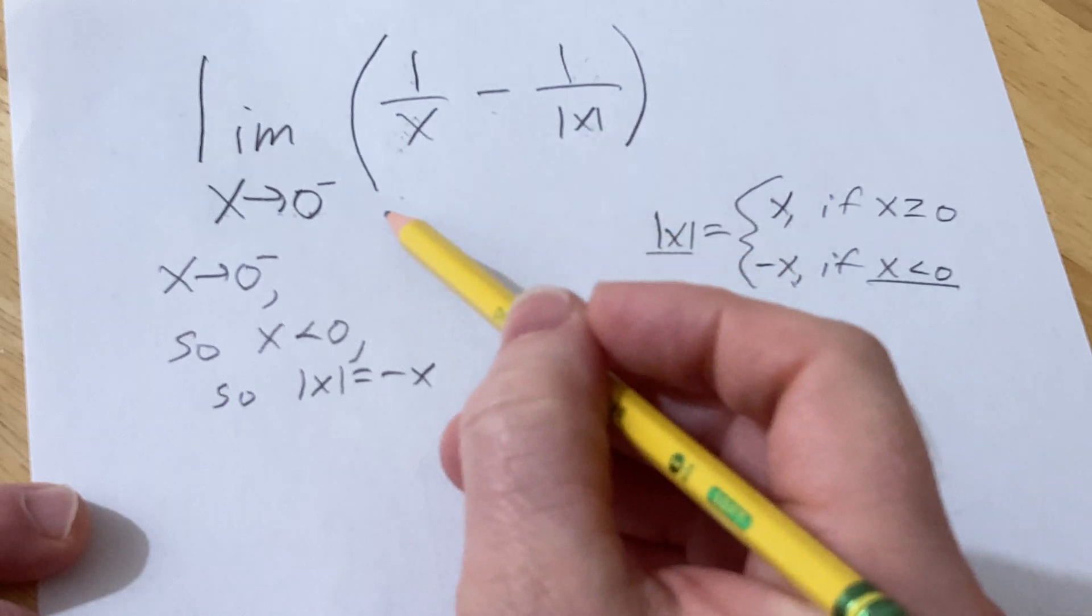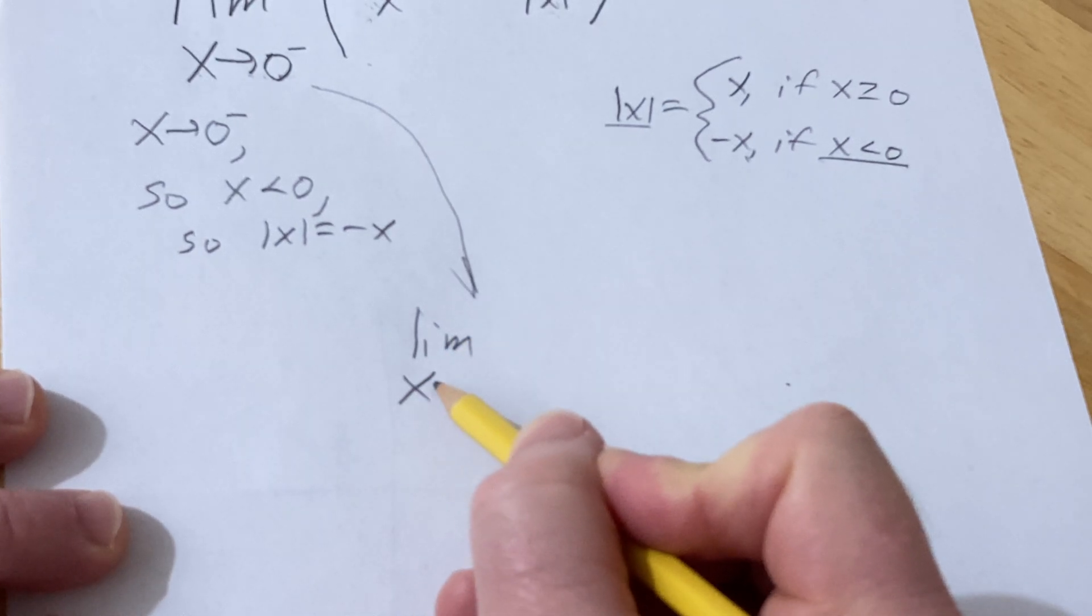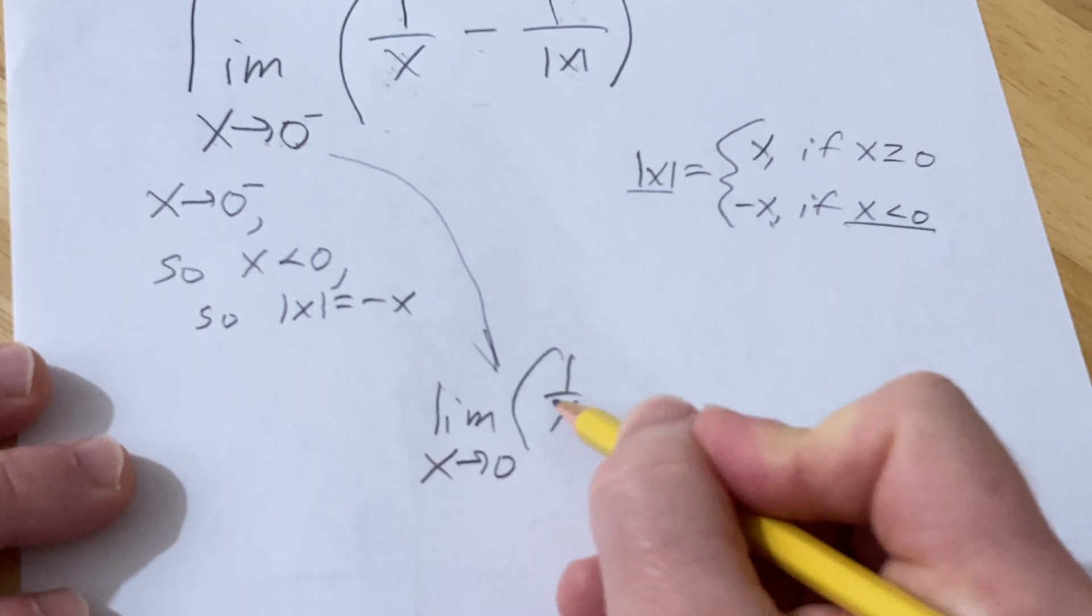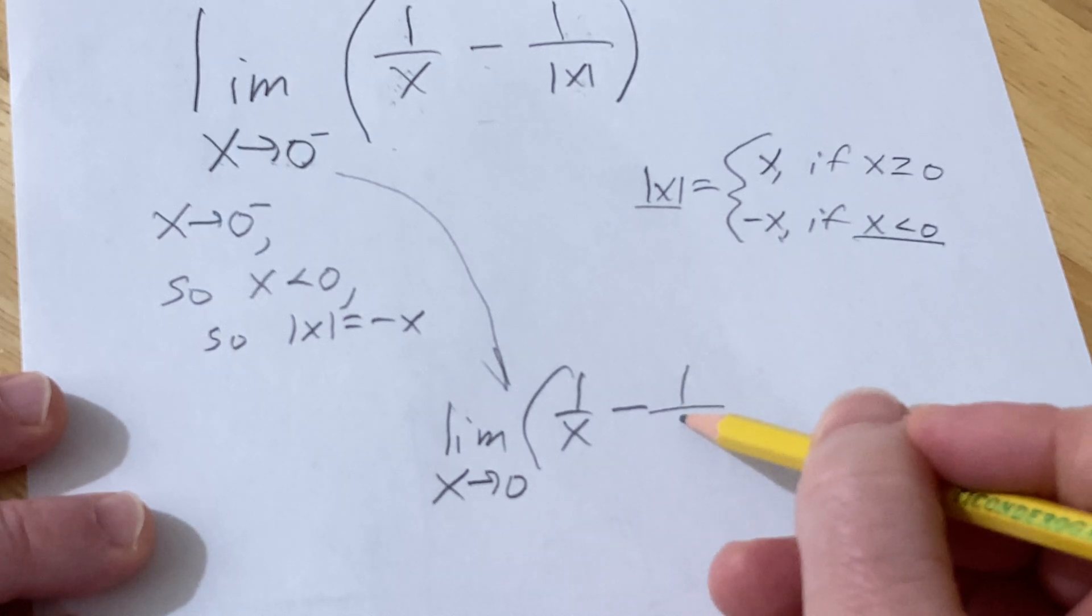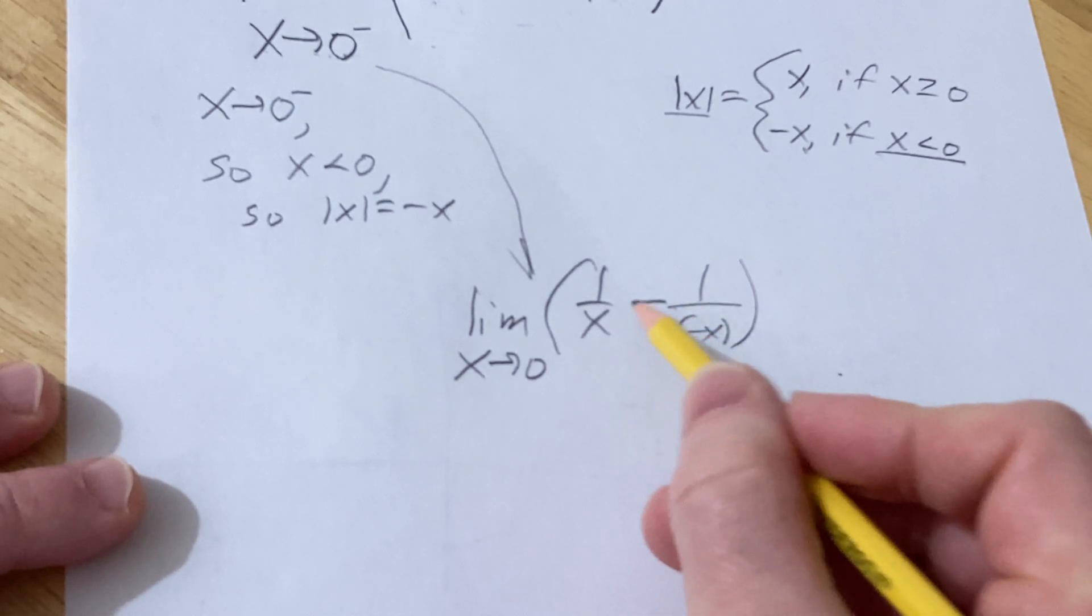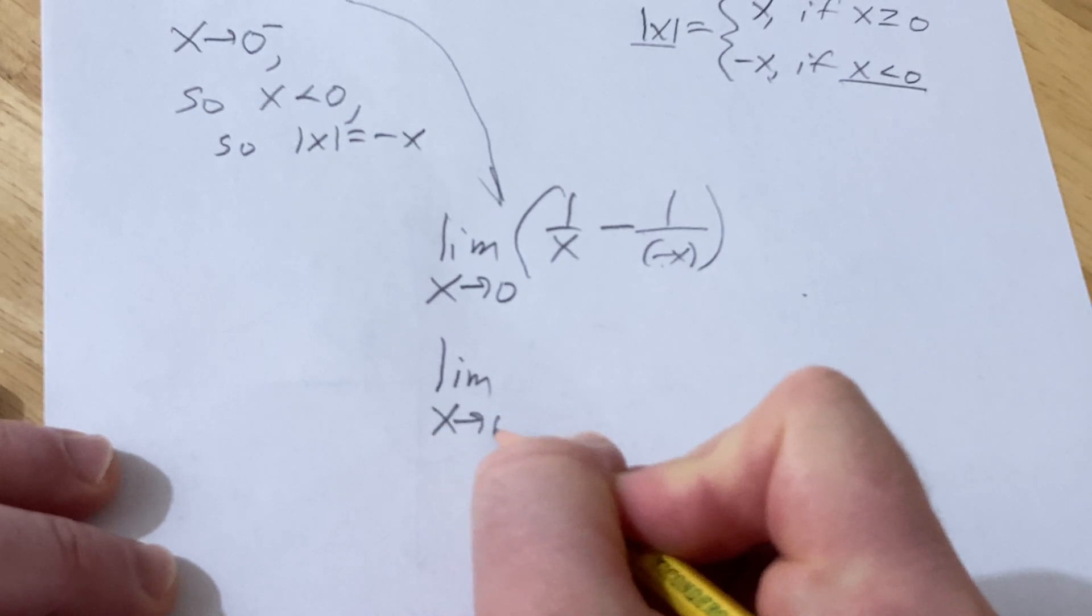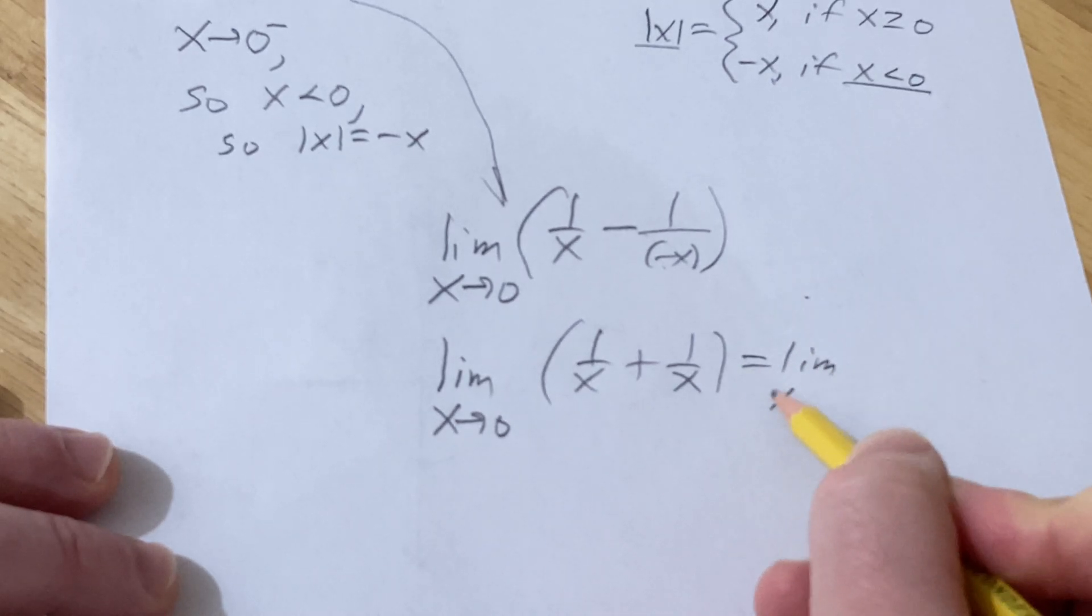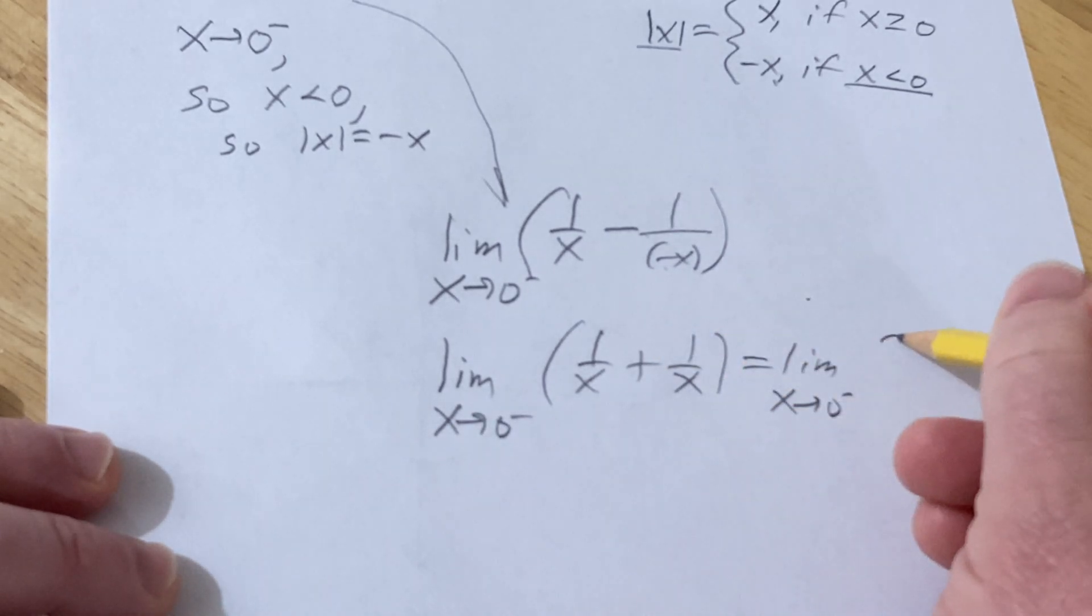So let's go ahead and start by rewriting what we have here. So our limit is limit as x approaches 0, and we still have the 1 over x, so 1 over x minus, and then the absolute value of x is minus x, so it's 1 over minus x. This minus can come upstairs and then you have two negatives, so it becomes a positive. This is the limit as x approaches 0 of 1 over x plus 1 over x. This is the limit as x approaches 0 from the left, I forgot to put that, of 2 over x.